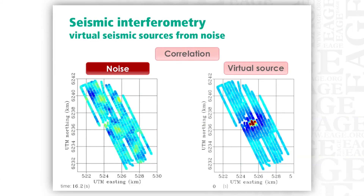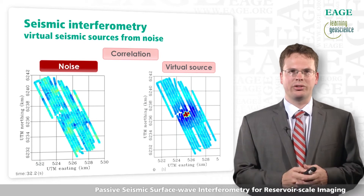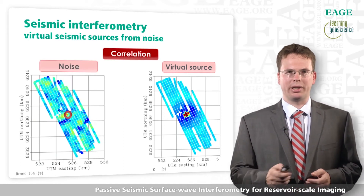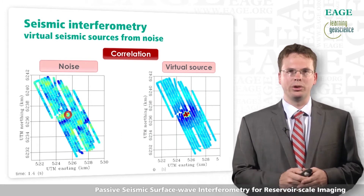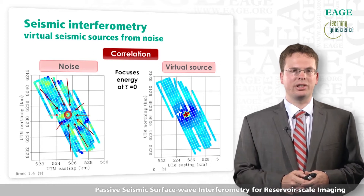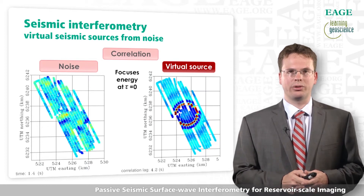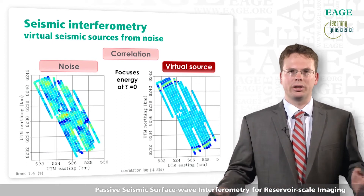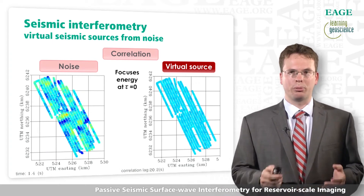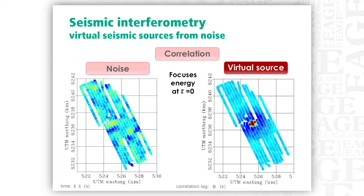What does seismic interferometry look like applied on real data? On the left you can see noise recordings — I simply animate a series of time slices showing a purely chaotic wave field. But if you take the recording at one station and cross-correlate it with recordings at all other stations, that actually focuses the energy at tau equals zero at that station. If you then look at correlation lags, you retrieve virtual seismic sources where waves propagate to all other receivers in the field with an appropriate time lag corresponding to the time delay it takes for a wave to travel from the source to the receiver.